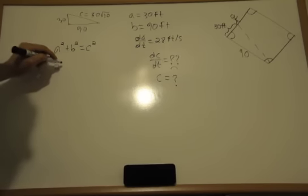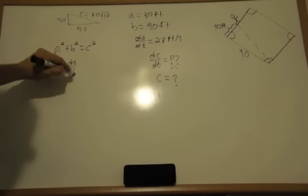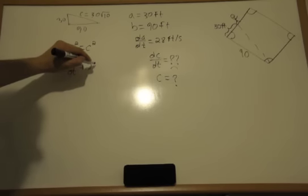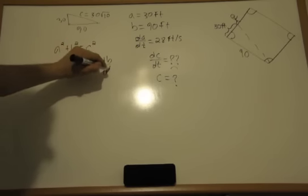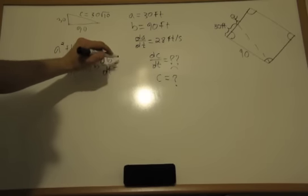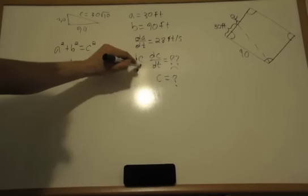So now we take the derivative with respect to time of this equation. So it's going to be 2a da/dt plus 2b db/dt is equal to 2c dc/dt.